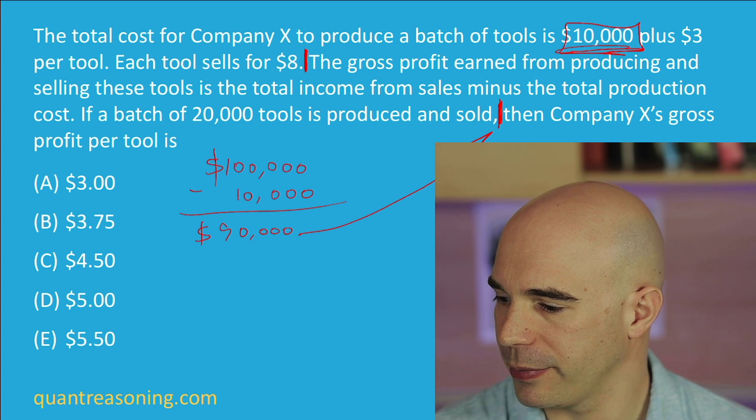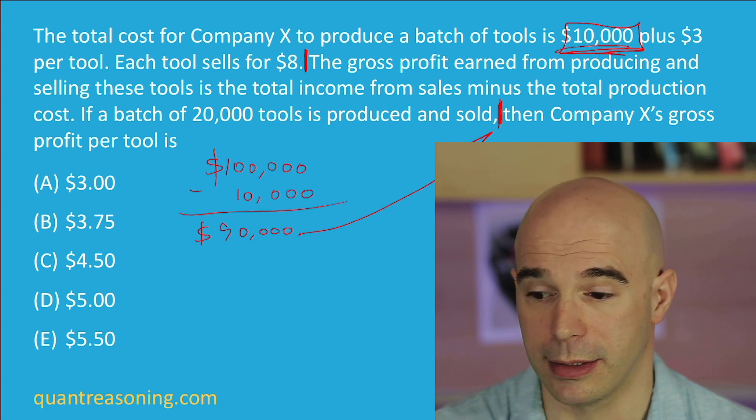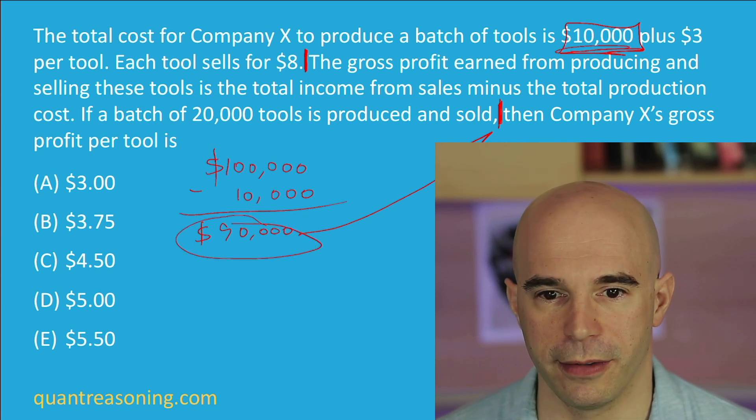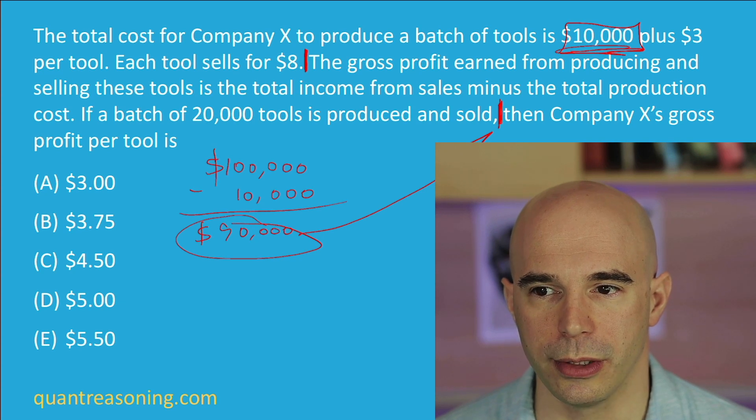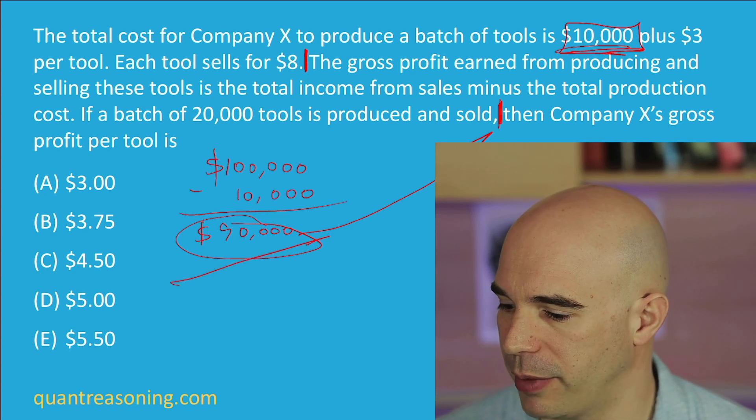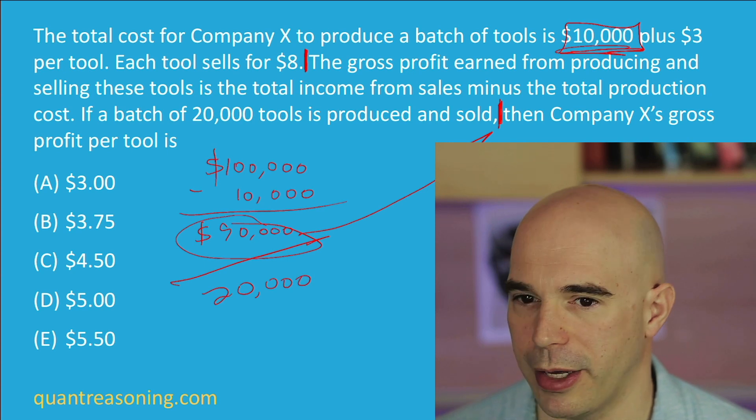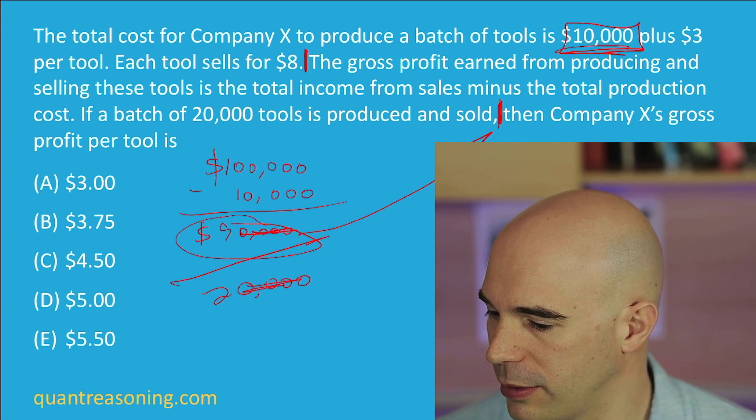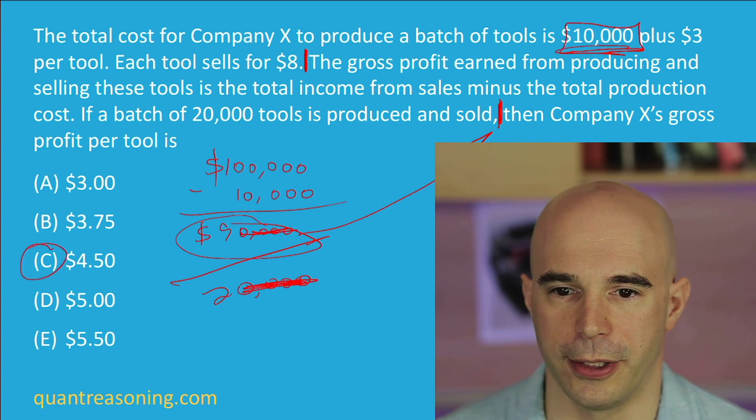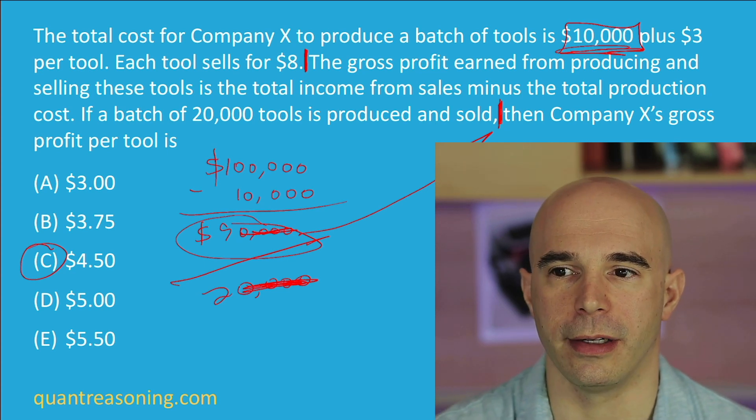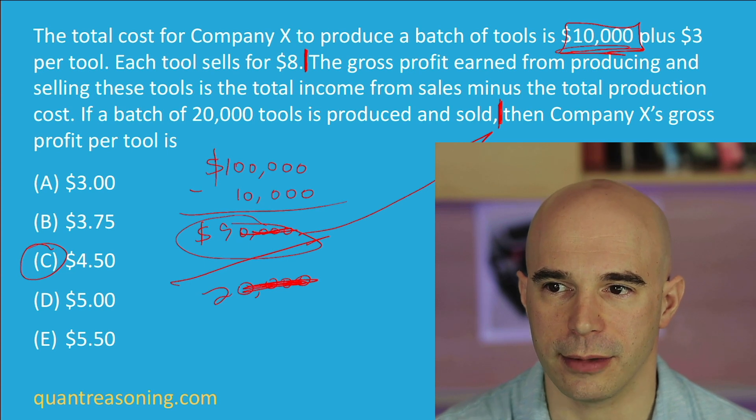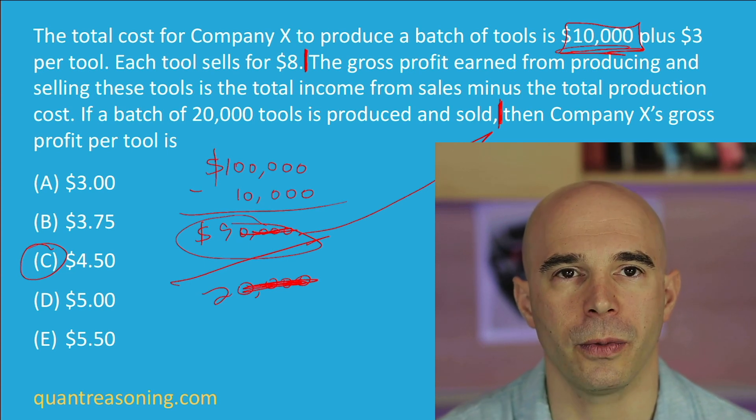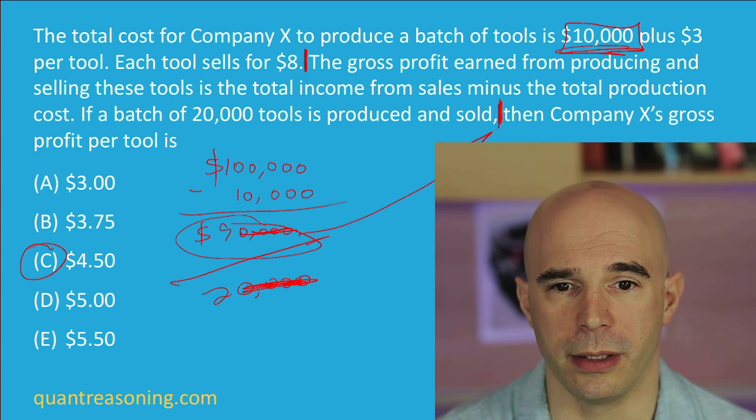Then we keep reading. Company X's gross profit per tool is. So what we have here is a total gross profit. They want it per tool, so we're going to have to divide that by the number of tools, which was 20,000. Reduce the zeros, and you're left with nine halves, also known as four and a half. So classic GMAT word problem where if you pause appropriately and make inferences along the way, then by the time you get to the question mark, you're pretty much already done.